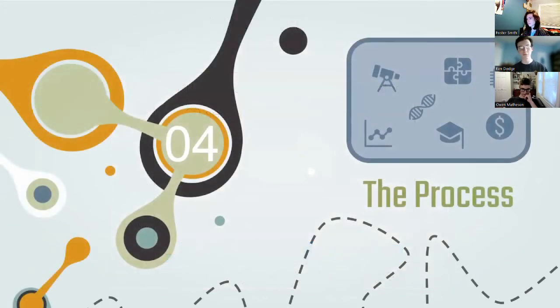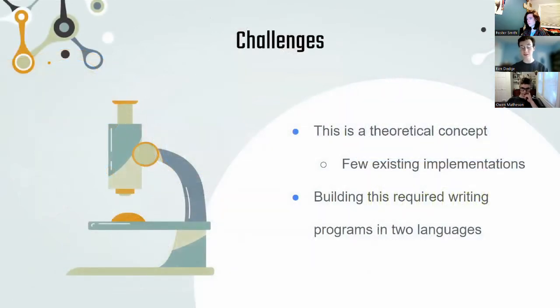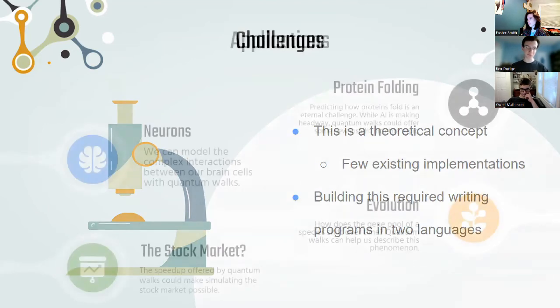Now let's talk about what we learned from this. As you can imagine, building this system came with quite a few challenges. This is a pretty theoretical concept so most of the resources available were by theoretical physicists. There were very few existing resources on implementing this algorithm, which meant we had to do most of the work and learning. Speaking of implementation, to build this, we needed to write programs in two different languages with two distinct and very often contradictory paradigms.